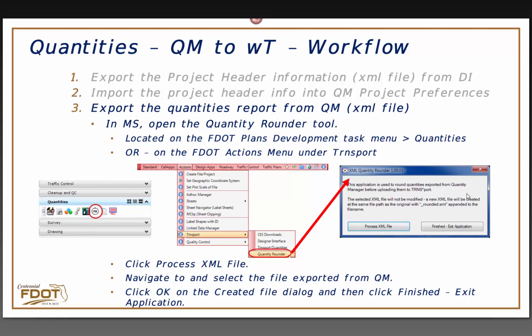On the MicroStation side, we have a tool called the XML Quantity Rounder. You can access it from the Quantities Tasks menu or from Actions, Transport, Quantity Rounder. It opens a dialog that goes through the XML file, finds the unit, and rounds the quantity value to the correct decimal place. It does not overwrite the original file — it creates a file with the exact same name and adds 'underscore rounded' at the end so you know which one is the new file. Once it's created, click Finish and exit.